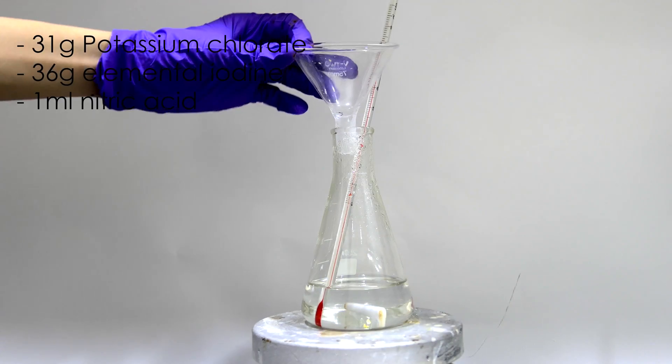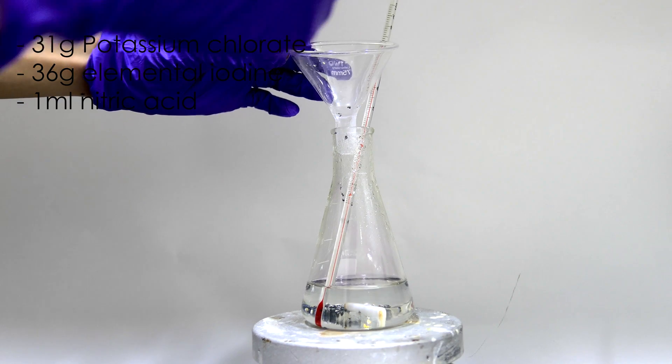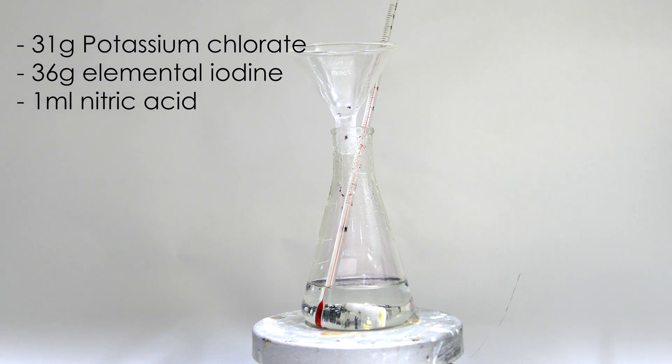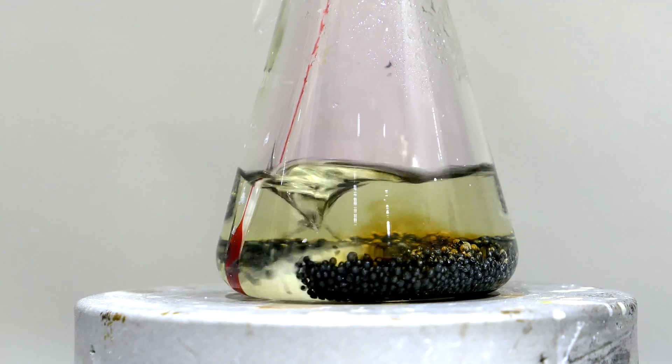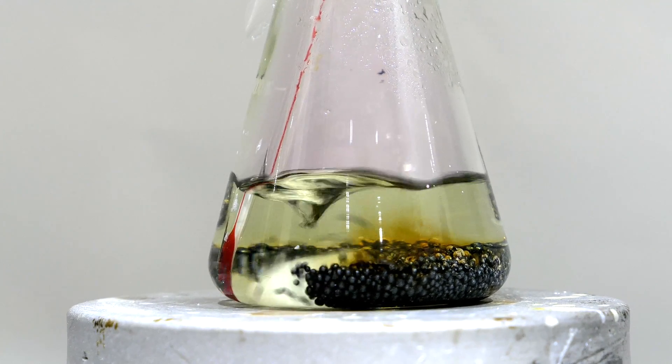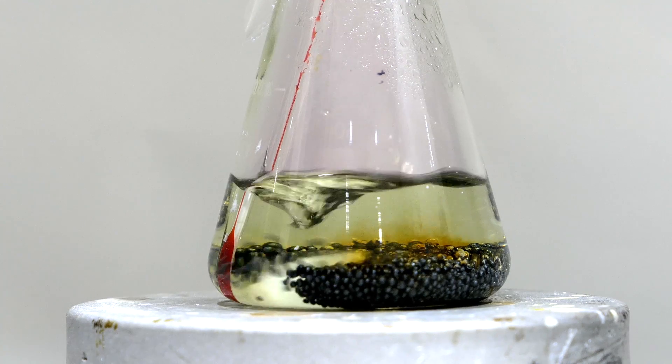First, 31 grams of potassium chloride is dissolved in 100 mL of water. Wait for all the solid to dissolve, and 36 grams of iodine is added. Then add 1 mL of nitric acid as a catalyst.